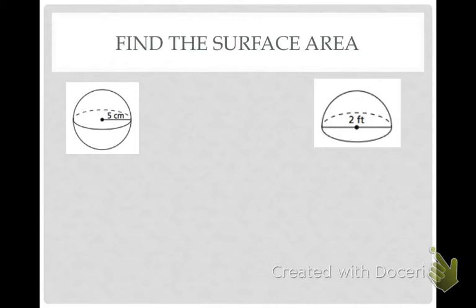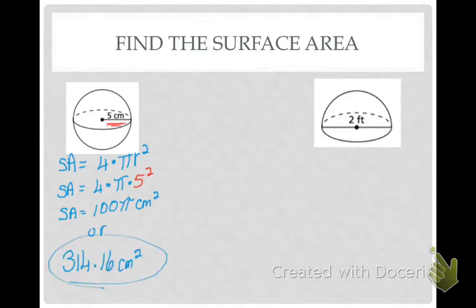So, let's use this. On the right, this sphere has a radius of 5. So, let's write down our surface area formula, 4 times pi r squared. And, let's plug in 5. And, again, we can answer in terms of pi, or we can answer as a number. If we answered in terms of pi, this would be 100 pi centimeters squared. Or, if you multiplied the 100 by pi, you'd get 314.16 rounded centimeters squared.